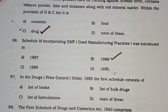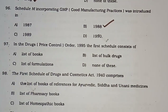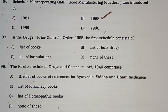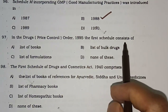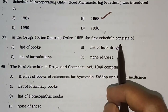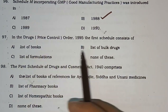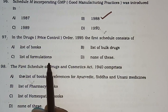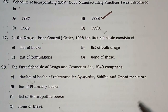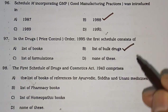Question number 97: In the Drug Price Control Order (DPCO) 1995, the first schedule consists of — list of books, list of bulk drugs, list of formulations, or none of these. The correct answer is list of bulk drugs.